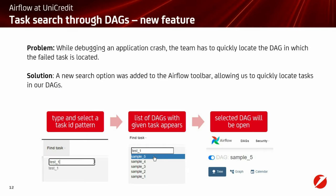The next plugin is the task search through DAGs. We needed a way to quickly find a task in Airflow, so we created an Airflow search window in the Airflow toolbar. We are aware of the Browse Task Instances feature in Airflow; however, we needed something quicker without all the filtering, and which would work not only on task instances but also on tasks themselves.